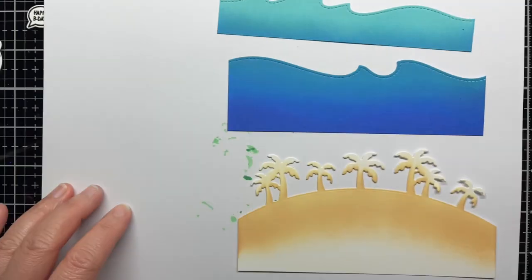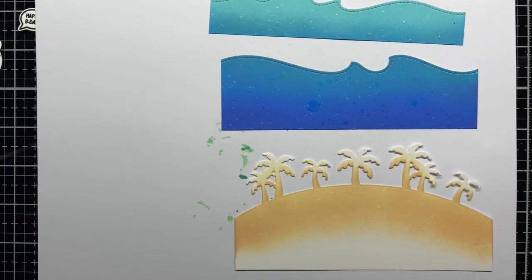Then I splatter the waves and island with water, blot off the excess and set them aside to dry completely.